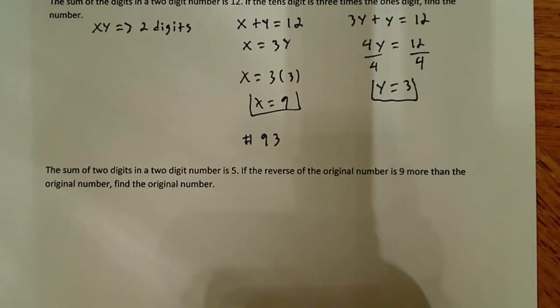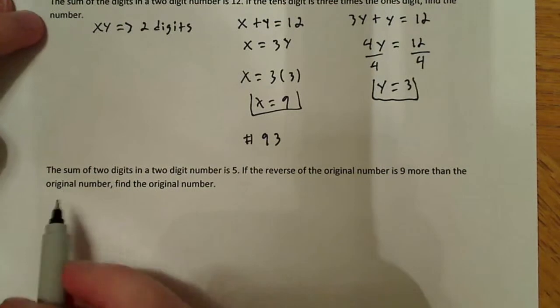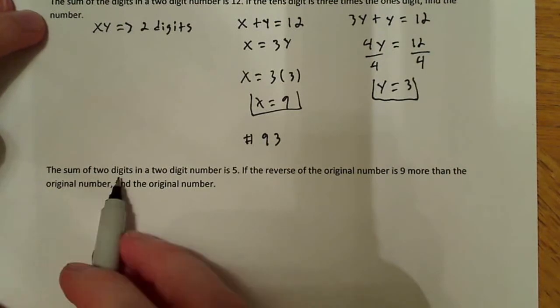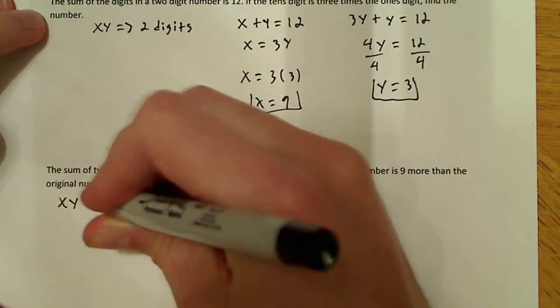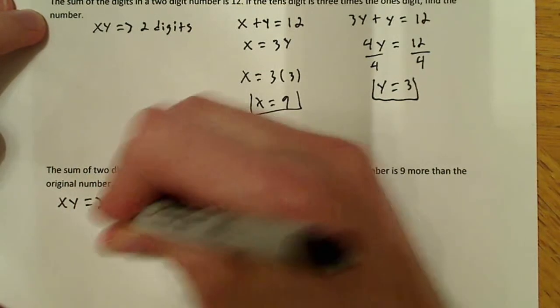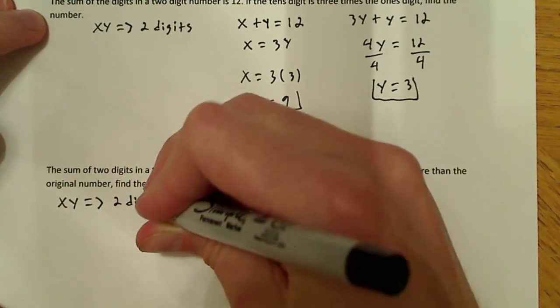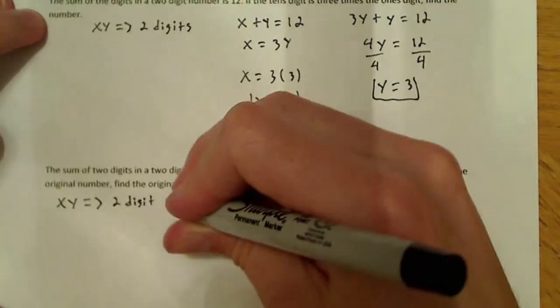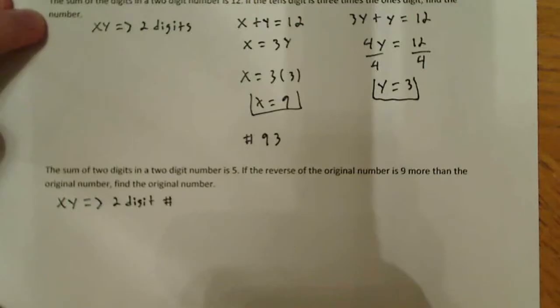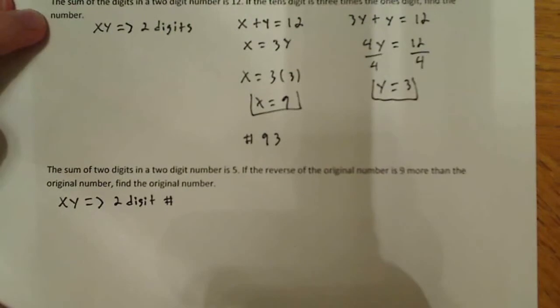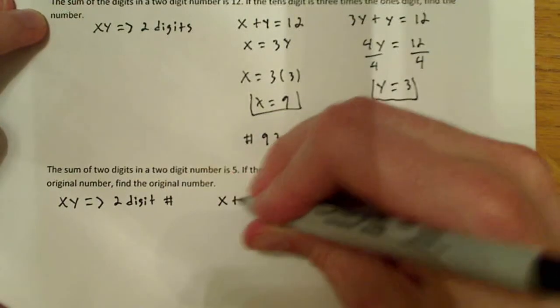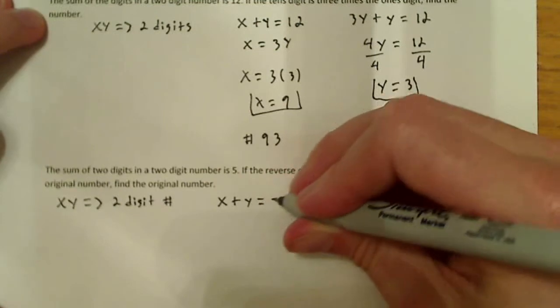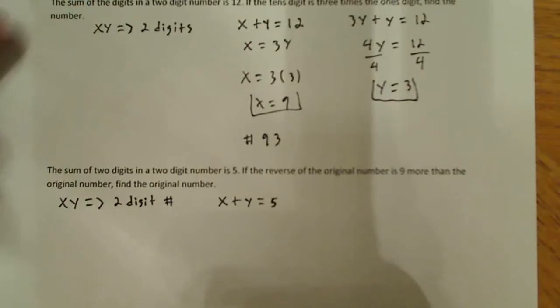This is a little more complex than the previous two, so first let's look at our information. We have a two-digit number, x, y, which goes over to the two-digit number. Now it says the sum of the two digits is 5, so x plus y equals 5. That's our first equation.